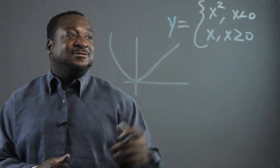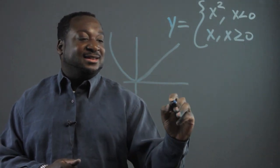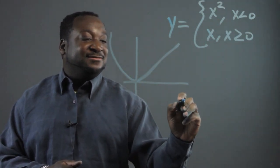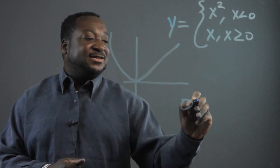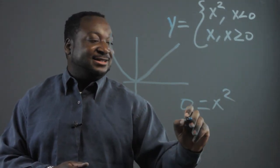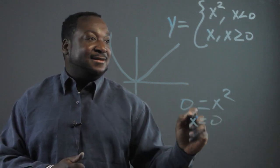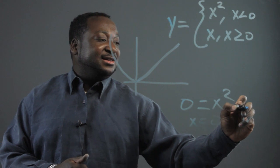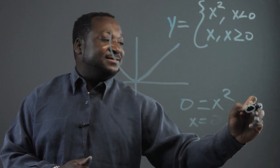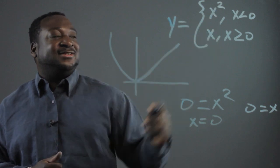Basically, all we want to do is find the intercepts. When y equals 0 in the first function x squared, x is equal to 0. And when y equals 0 for the next function, x is equivalent to 0. These are the two functions here.